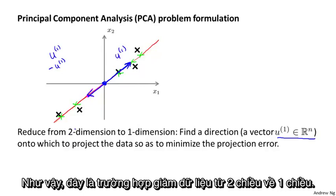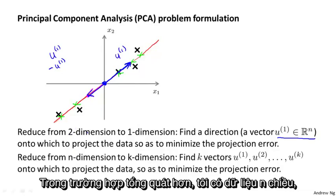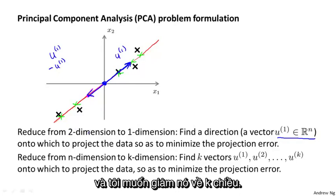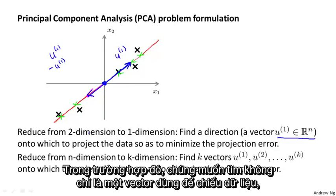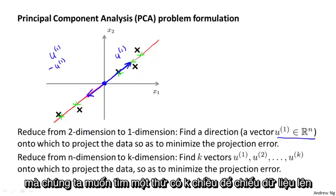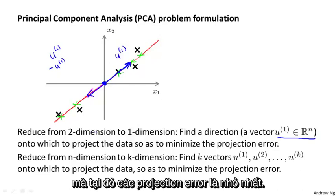This is a case of reducing data from two-dimensional to one-dimensional. In the more general case, we have n-dimensional data and we want to reduce it to k dimensions. In that case, we want to find not just a single vector, but k directions onto which to project the data so as to minimize the projection error.